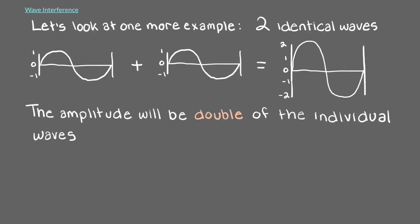Specifically, the amplitude will be double of the individual waves, since 1 plus 1 equals 2 for the first peak and negative 1 plus negative 1 equals negative 2 for the second peak.